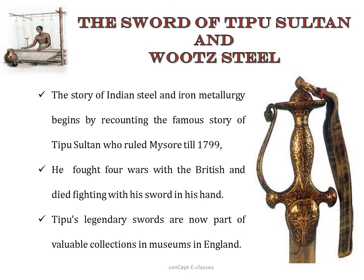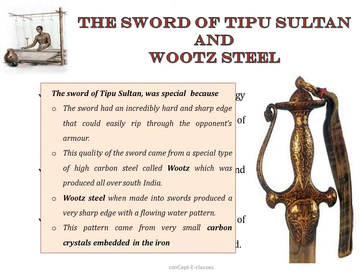The next topic is the Sword of Tipu Sultan and wootz steel. The story of Indian steel and iron metallurgy begins with the famous story of Tipu Sultan, who ruled Mysore till 1799. We saw how Tipu Sultan fought four wars with the British and died fighting with his sword in his hand. Tipu's legendary swords are now part of a valuable collection in museums in England. The sword of Tipu Sultan was very special because it was incredibly hard and the sharp edge could easily rip through an opponent's armor. This quality came from a special type of high-carbon steel called wootz, produced all over South India. When made into swords, wootz steel produced a very sharp edge with a flowing water pattern, which came from very small carbon crystals embedded in the iron.